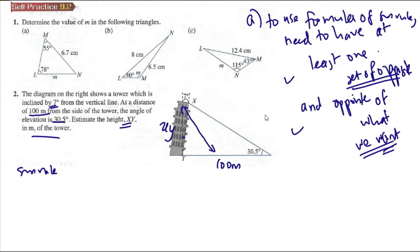And then second, we must have the opposite of what we want. We want to find xy, and the opposite of xy is angle 30.5. Now we can use the sine rule.